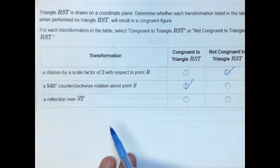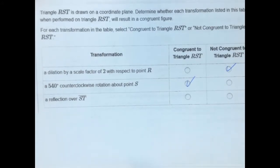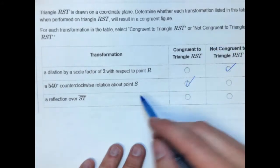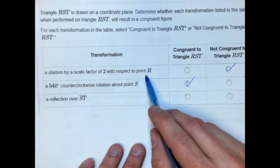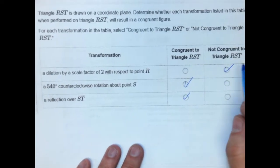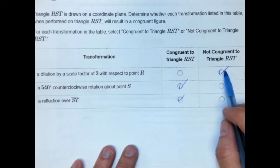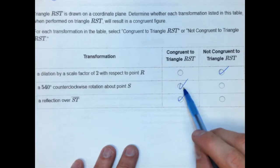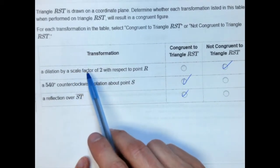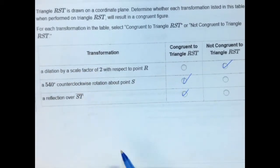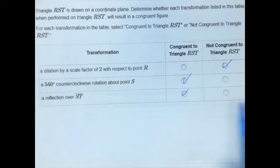A 540 degrees counterclockwise rotation - well, rotations do not change the size, nor do they change the shape of the preimage. So that would be congruent. And reflections, those also are considered rigid transformations because they do not change the size of the shape. They just flip it. So this is a twist, this is a flip, and this is an enlargement. So this first option would not be congruent, whereas these other two would be. The only way this dilation would be congruent would be if you multiply by a scale factor of 1, which would not change anything.